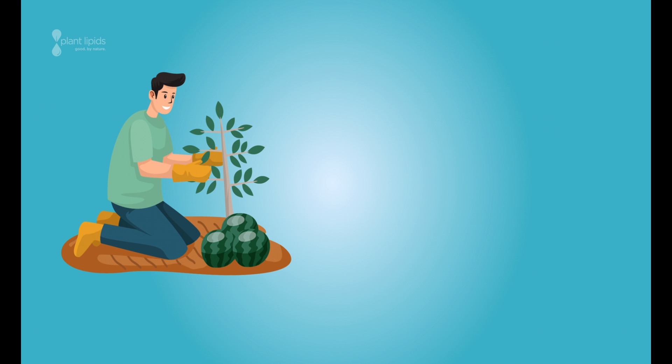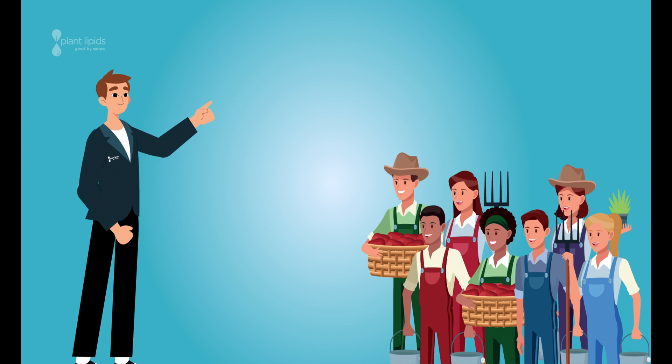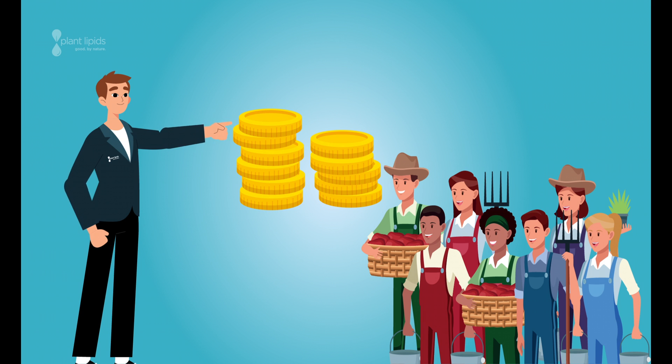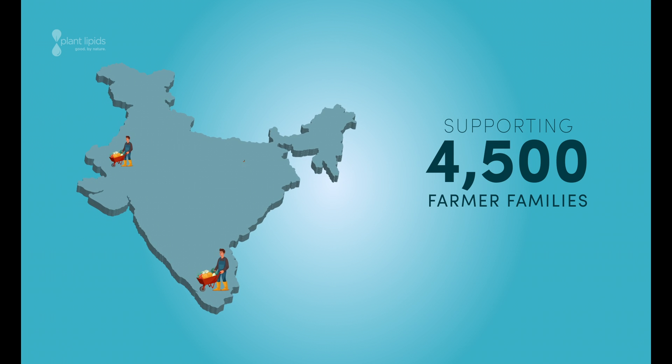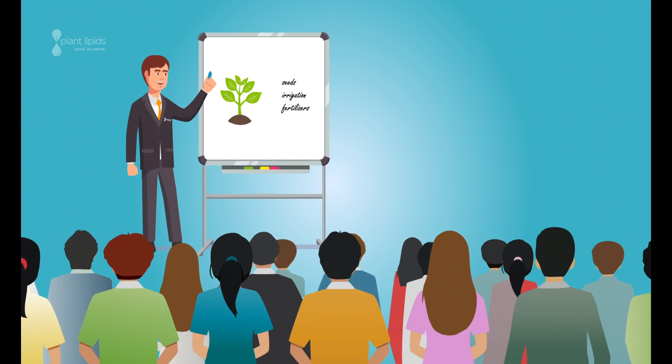The most important aspect of our supply chain is our farmers. Plant Lipids engages directly with the farming community and guarantees them a steady income from a sustainable partnership. We are associated with over 4,500 farmer families distributed across the country.